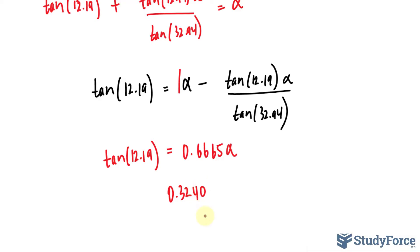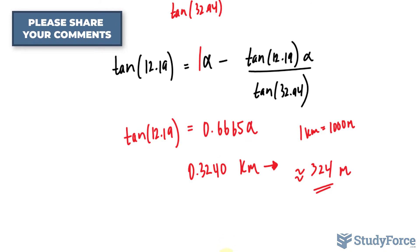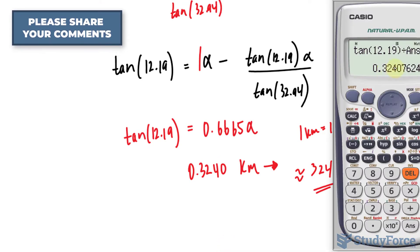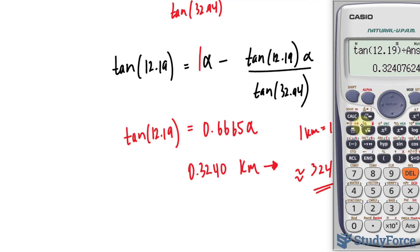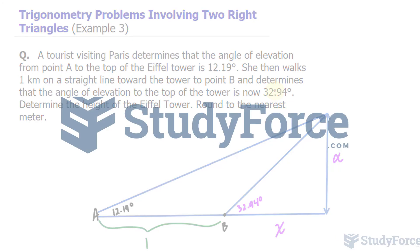To interpret that, that is 0.3240 kilometers, which when converted into meters, remember, one kilometer is equivalent to 1,000 meters. When you convert this, you get 324 meters. If you need this to the correct number of significant figures, you should have 324.1 meters. That is, if your teacher asks for the correct number of significant figures, because this was 4, so is that. So you should also end up with 4. And there you have it. That is how to solve trigonometric problems involving two right triangles.